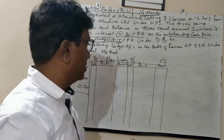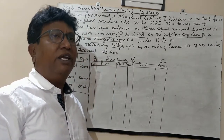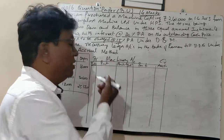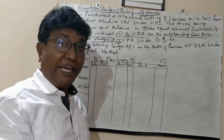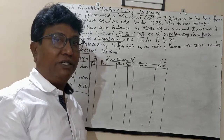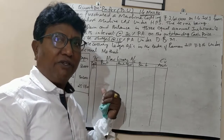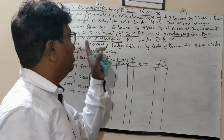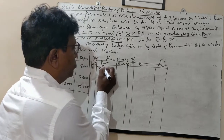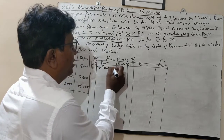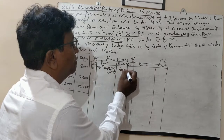To start the machinery account: when you buy any asset, the entry is machinery account debit to bank or cash. But here, we are buying under the hire purchase system. So on the first day of the first year, we made a down payment of ₹60,000 to the vendor, shown as to bank account for down payment — ₹60,000.